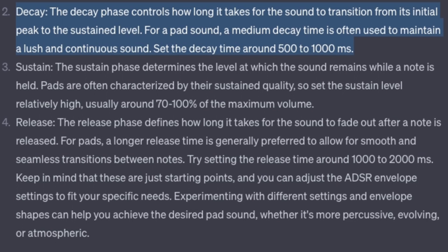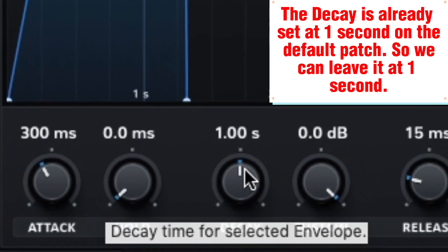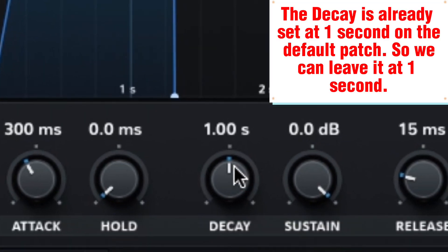Decay — the decay phase controls how long it takes for the sound to transition from its initial peak to the sustained level. For a pad sound, a medium decay time is often used to maintain a lush and continuous sound. Set the decay time around 500 to 1000 milliseconds. The decay is already set at 1 second on the default patch, so we can leave it at 1 second.